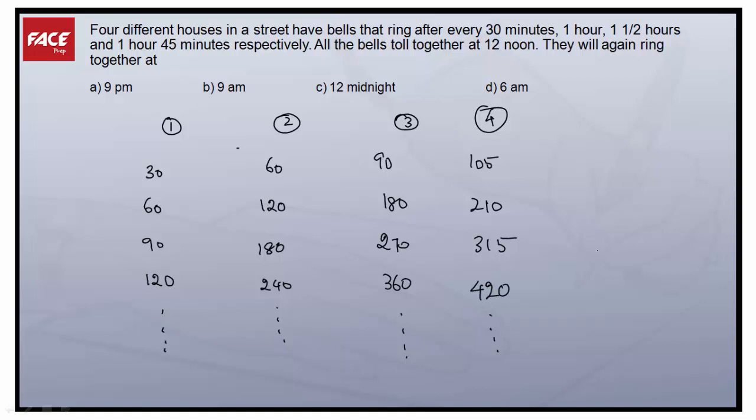So the question is, all the bells toll together at 12 noon, they'll again ring together. It means what? In all these four places we should have the same number, say x. I should have the same x in all places so that all four bells will ring together. So we have to find what is that x here. That x should be same all the places. So I have to find what is this x.